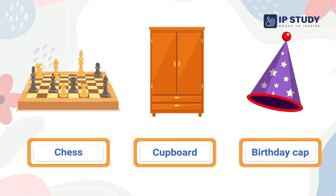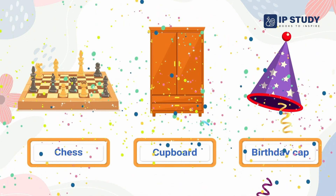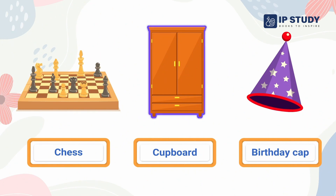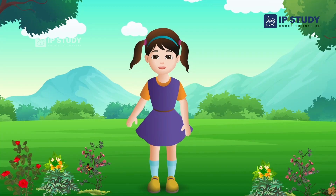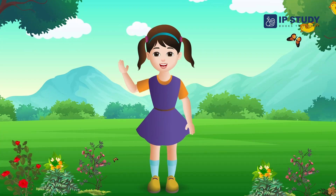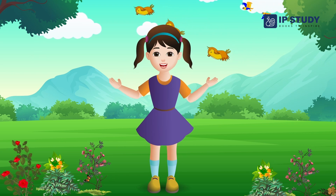Now can you tell me which of these shapes is a rectangle — a chest, a cupboard, or a birthday cap? That's right — the cupboard shape is a rectangle. Next, we will learn about the triangle shape when we meet again — till then, bye!